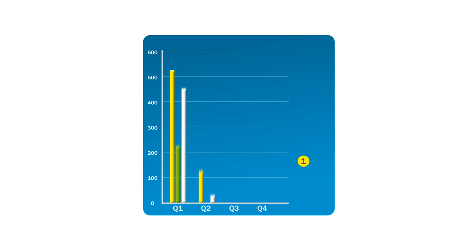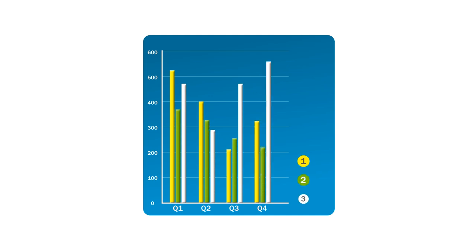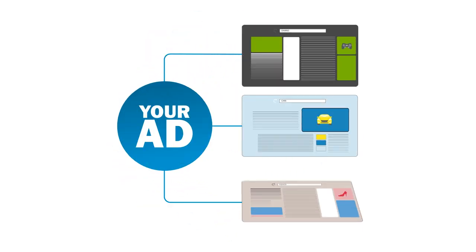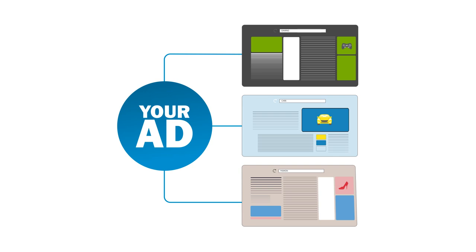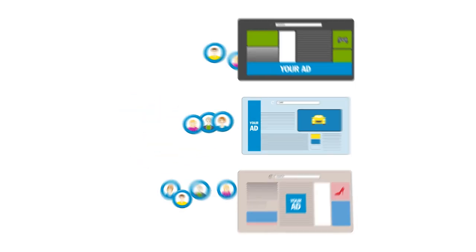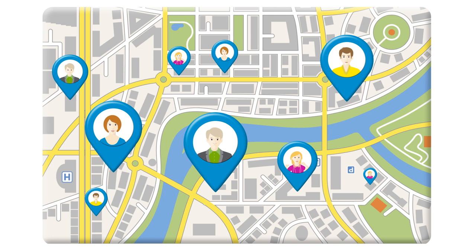With each campaign, you also get access to a results page where you can see how your ad is performing. You'll get up-to-date information on the top sites your ad has appeared on, the number of impressions your ad generated and how many users clicked on it, and a map to show you where they're located.